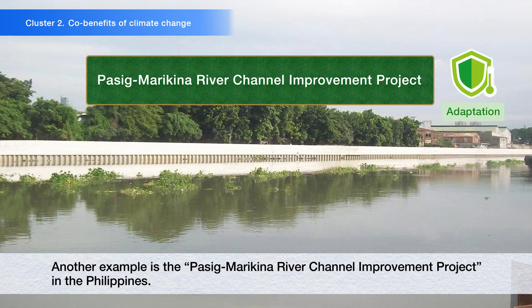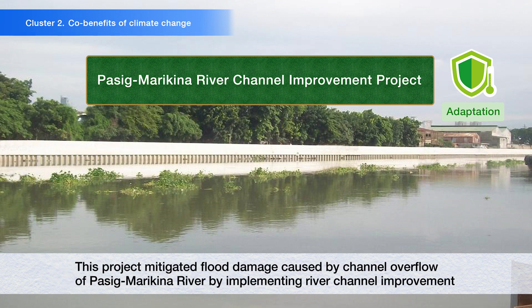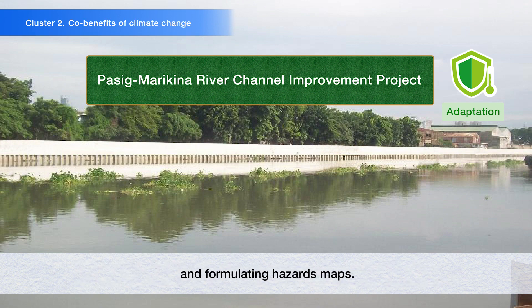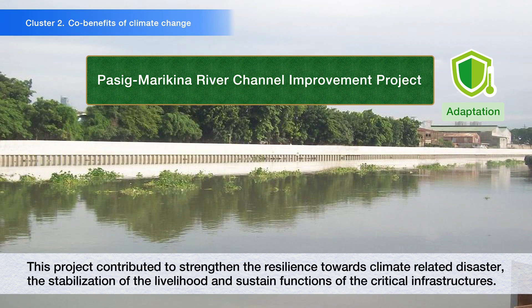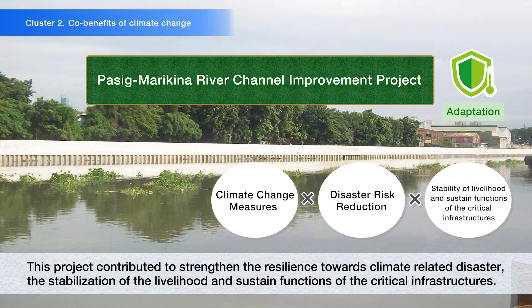Another example is the Pasig Marikina River Channel Improvement Project in the Philippines. This project mitigated flood damage caused by channel overflow of the Pasig Marikina River by implementing river channel improvement and formulating hazard maps. It contributed to strengthening resilience towards climate-related disaster, the stabilization of livelihoods, and the sustained functions of critical infrastructures.